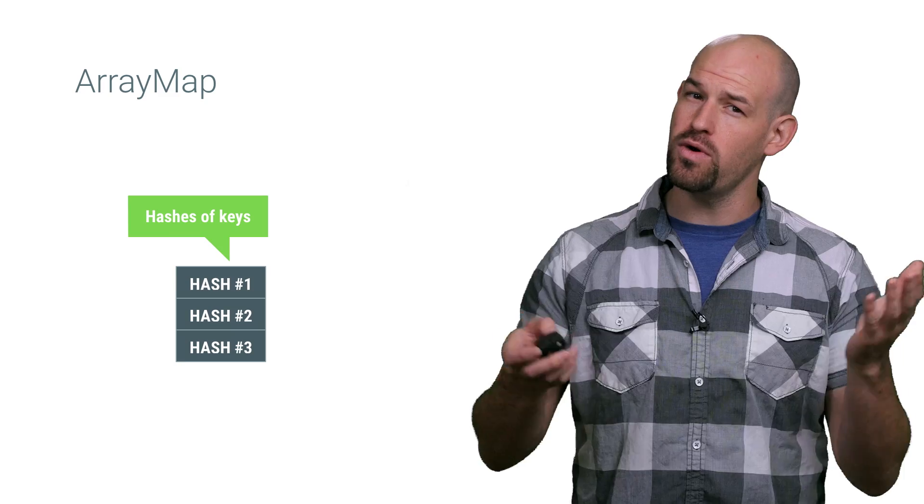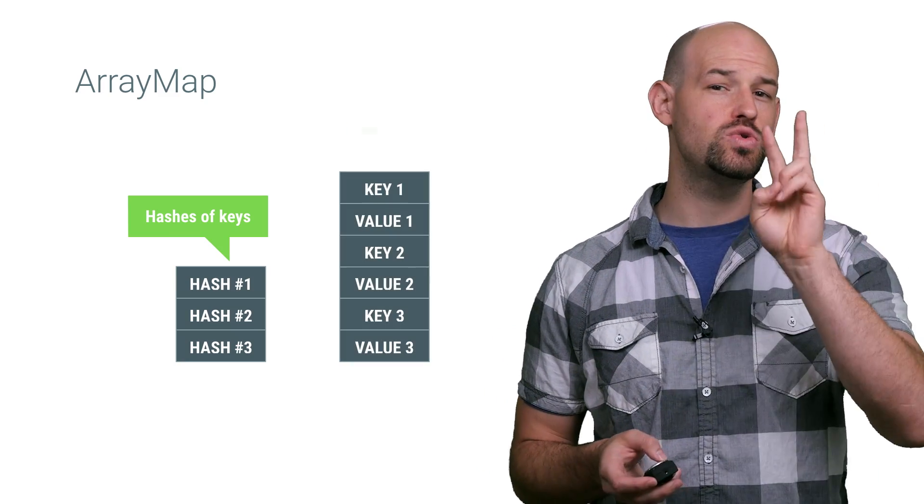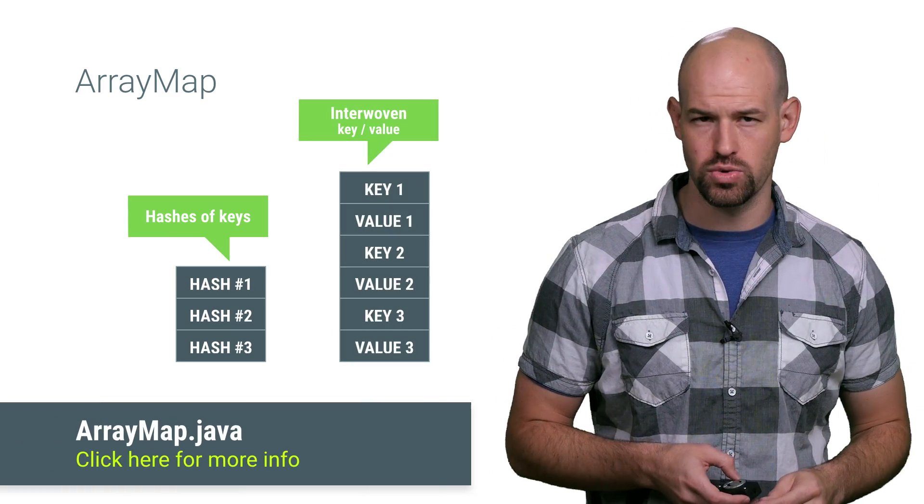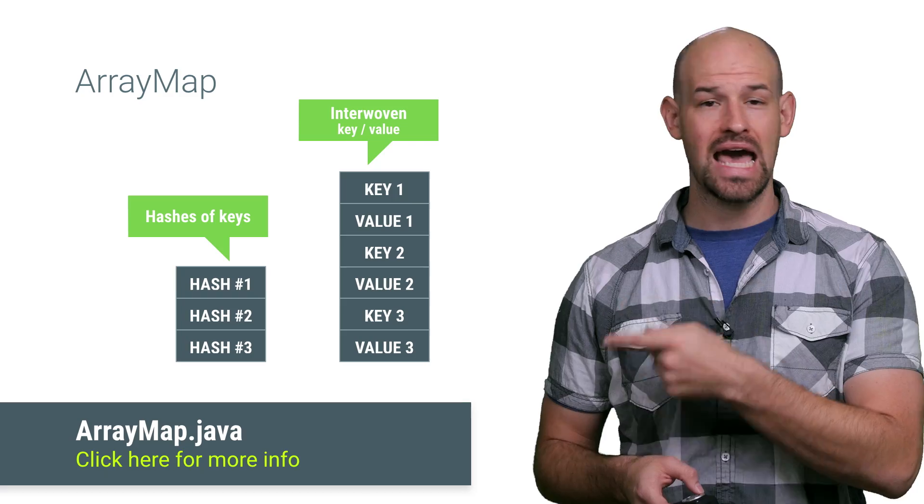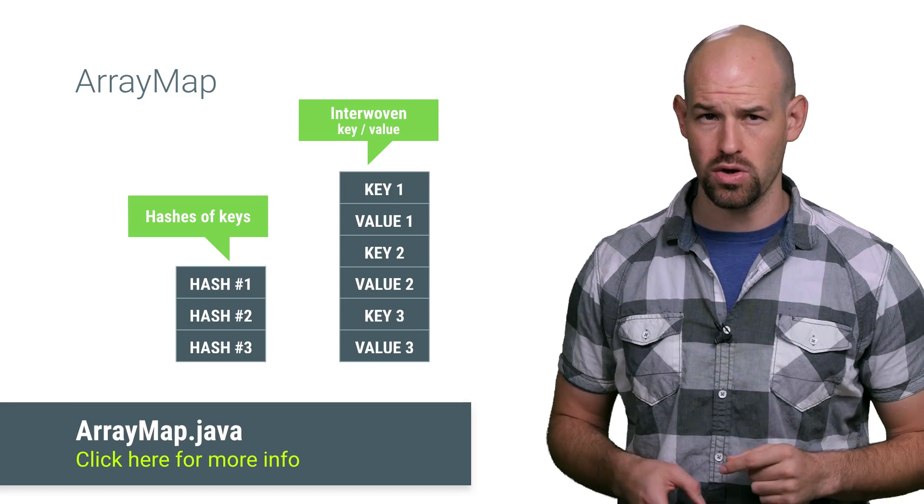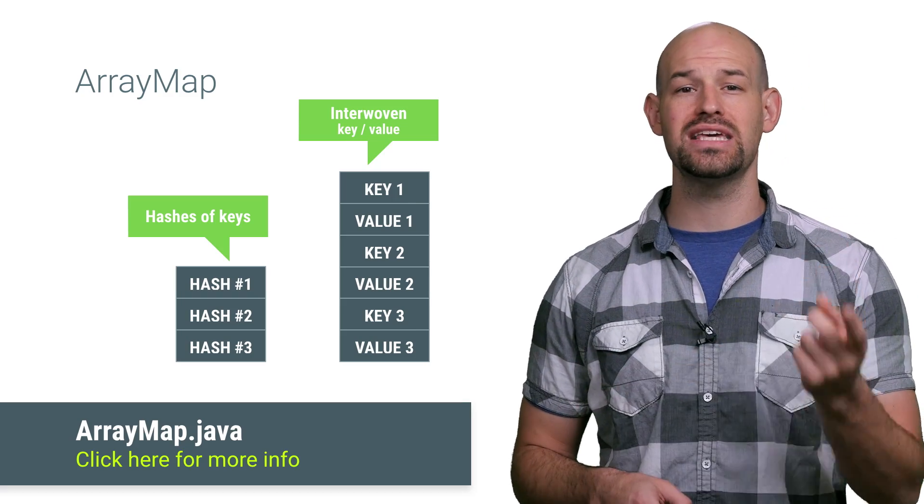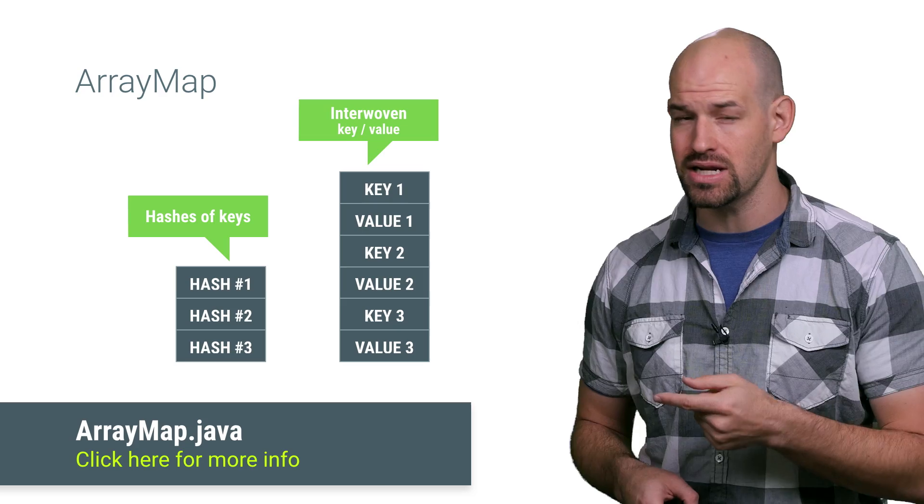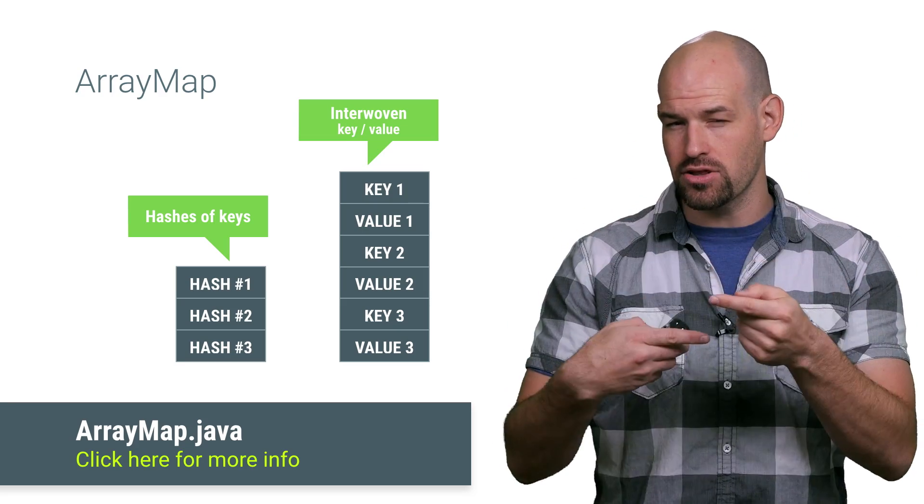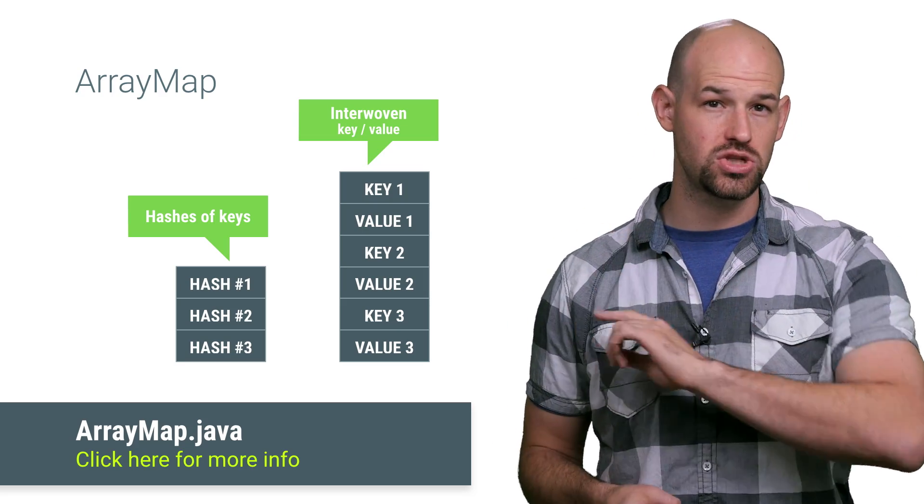ArrayMap. ArrayMap provides the identical functionality as a HashMap, but avoids all of its crazy overhead by using two small arrays instead of one large one. The first array contains the hashes of the given keys in sorted order. The second array stores the key and value objects that have been inserted into the collection, interwoven together according to the ordering of the sorted key array.